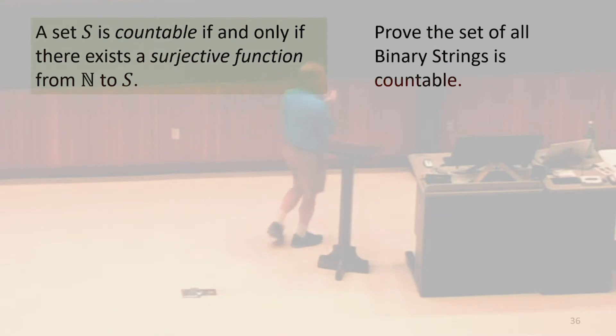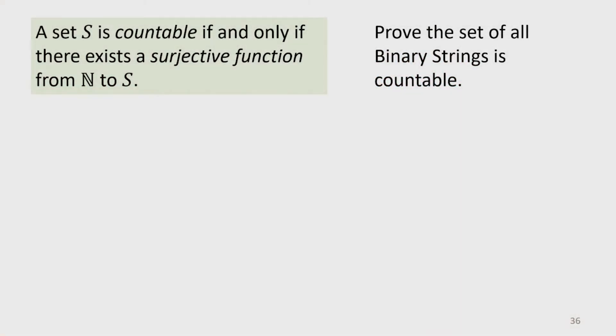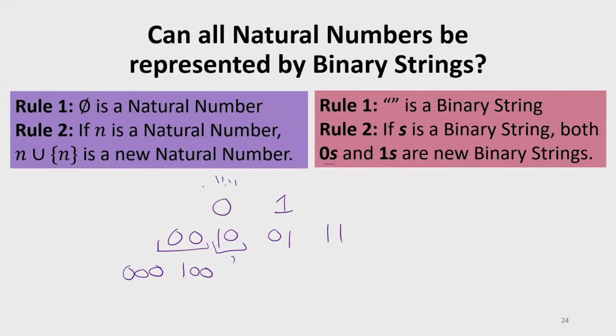What are we going to do to map the binary strings to the natural numbers? There was a tree somewhere. Yeah, this tree. We could do it like this, right? This is going to be zero, this is going to be one, this is going to be two, three, four, five, and so on.